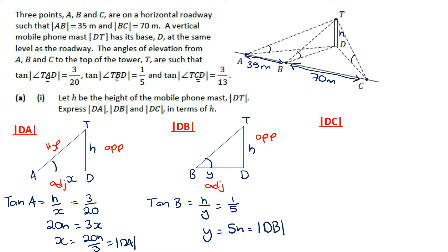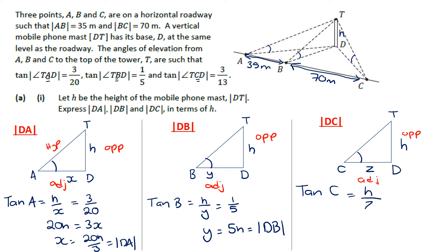The third side is DC. Here is C, T, and D, with height H. I'll call DC as Z. The tan of C is H over Z, which equals 3 over 13. Rearranging, 3Z equals 13H, so Z equals 13H over 3, which is the length of DC.